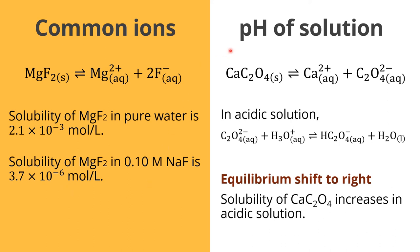Another condition that causes an equilibrium shift is the acidity of the solution. In acidic solution, an anion that is the conjugate base of a weak acid can react with H⁺ to produce the weak acid and water. When this occurs, the concentration of that ion in the equilibrium decreases, causing the equilibrium to shift to the right. This means the solubility of the compound increases in acidic solution.